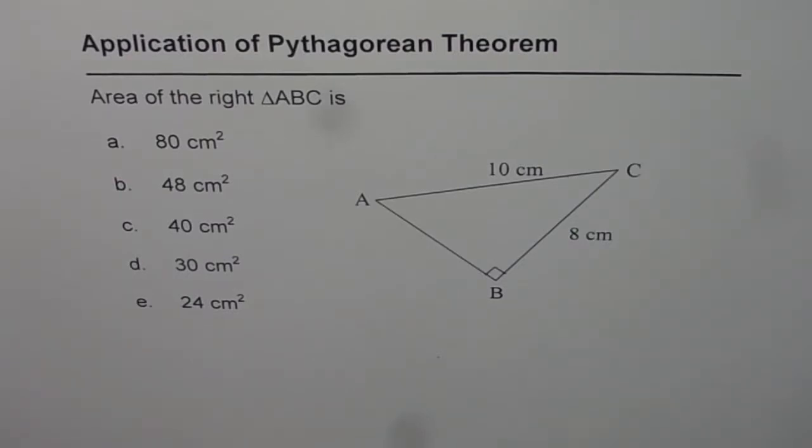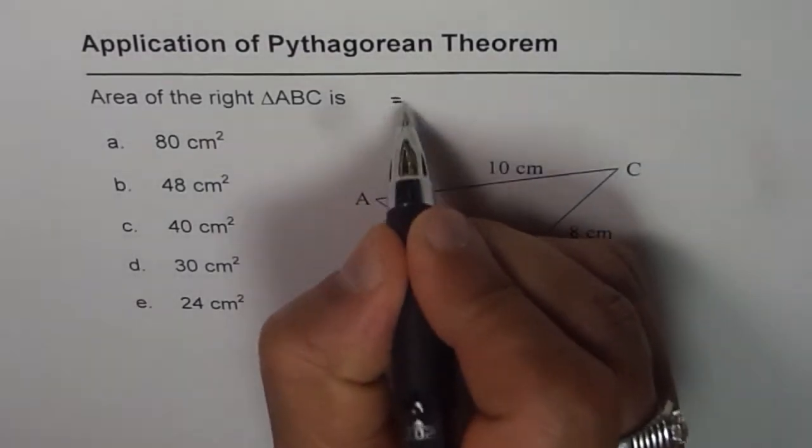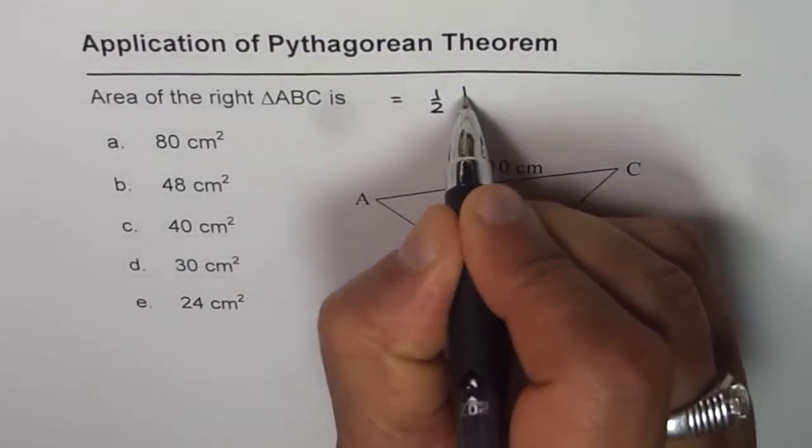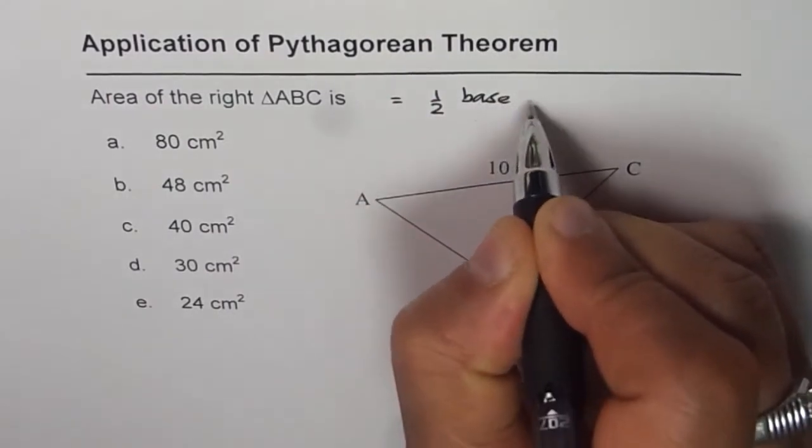Whenever we are trying to find area of a triangle, we can always use the formula which is equal to half base times height.